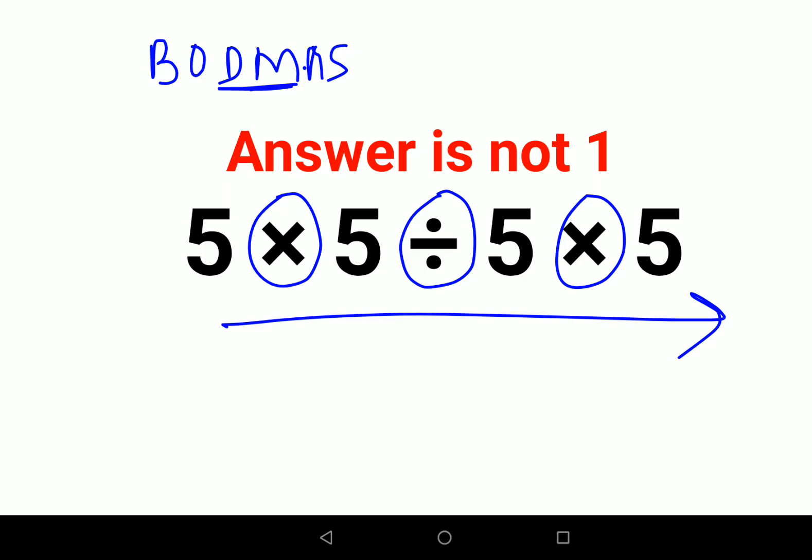Here in this case we will do 5 into 5 which is 25, divide by 5 into 5. So first we will divide 25 by 5. You get what? 5 again. And then you have to multiply by 5. So 5 into 5, answer for this one is 25.